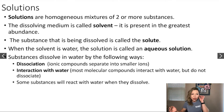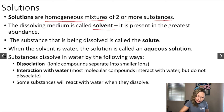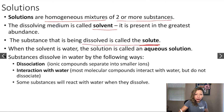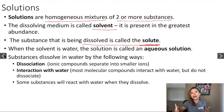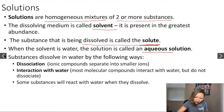So what is a solution? A solution is a homogeneous mixture of two or more substances. The solvent is the dissolving medium and it is present in the greatest abundance — you have the most of that. The substance that is being dissolved is called the solute. For example, looking at salty water, water is your solvent and salt is your solute. When the solvent is water, the solution is called an aqueous solution.